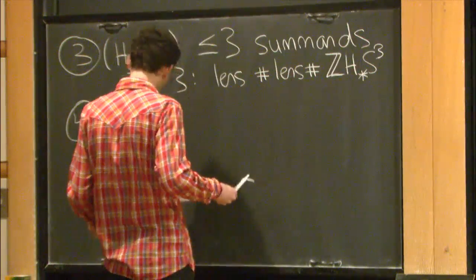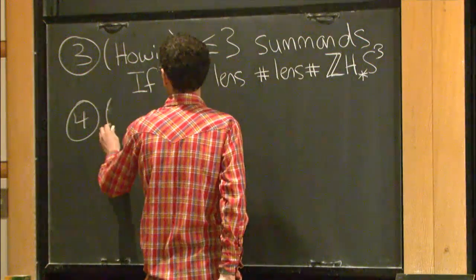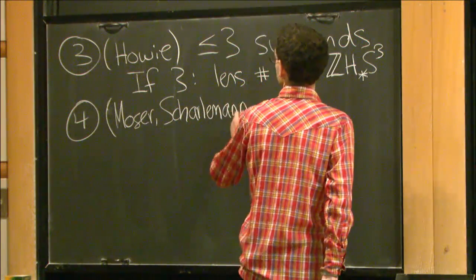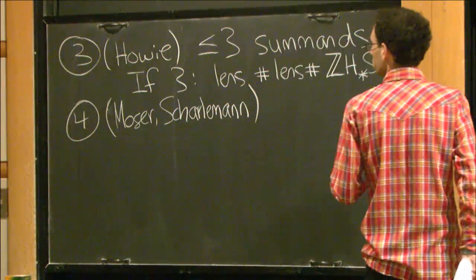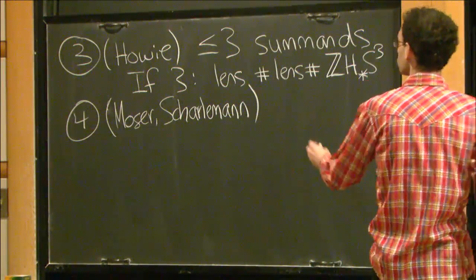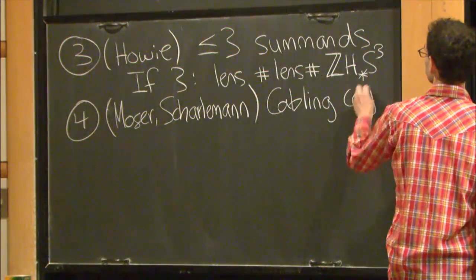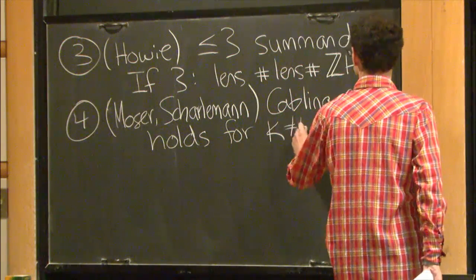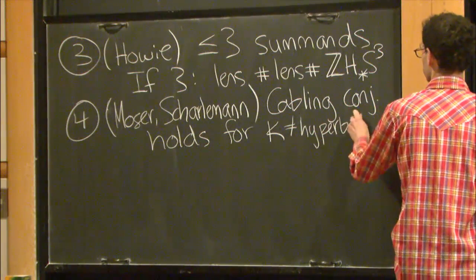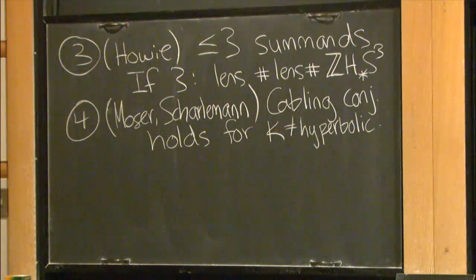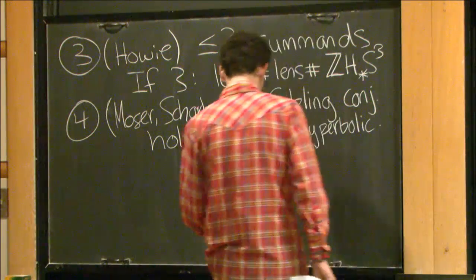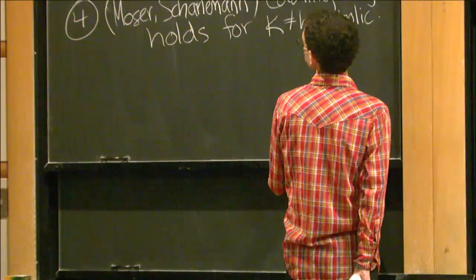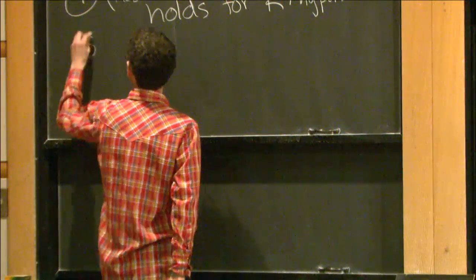We can ask about the kinds of knots that could be counterexamples. Work of Moser and Scharlemann, along with work of Cameron Gordon and others, shows the Cabling Conjecture holds for any non-hyperbolic knot. So what we're really interested in today is hyperbolic knots.